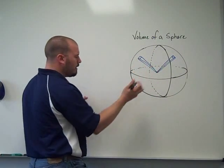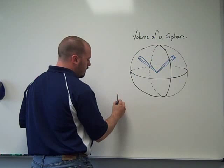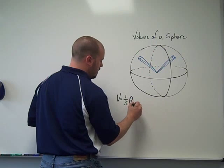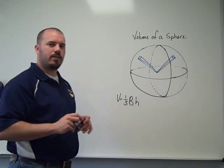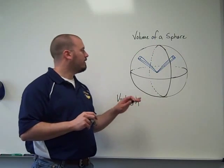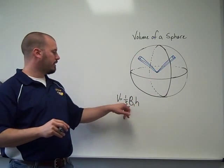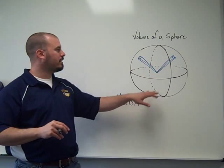All right, so when we look at any one pyramid, the volume of a pyramid is one-third the area of the base times the height. So we'll call this one number one. So it's one-third the area of base one times the height.